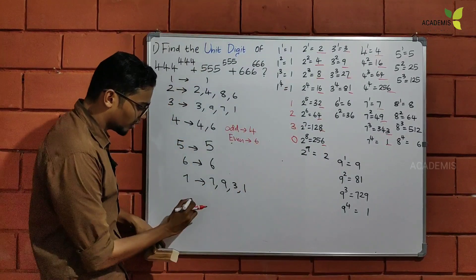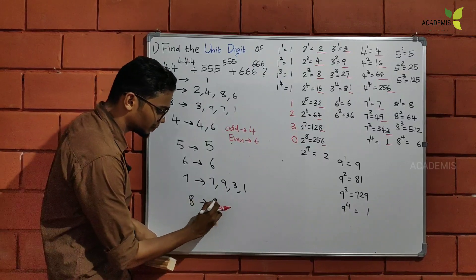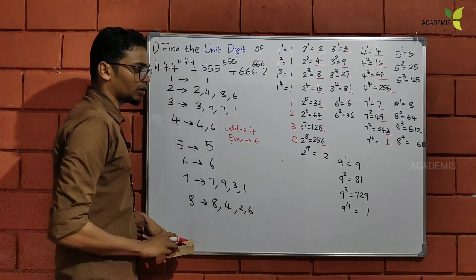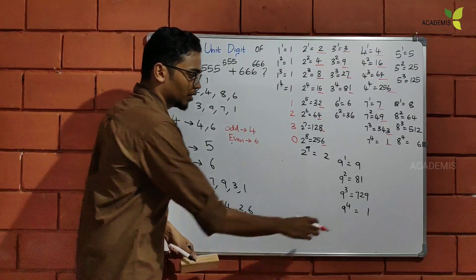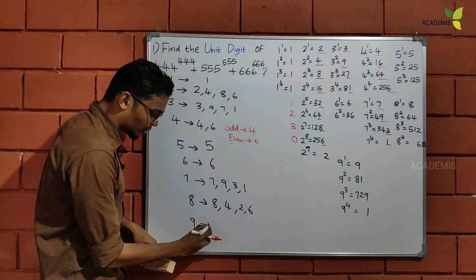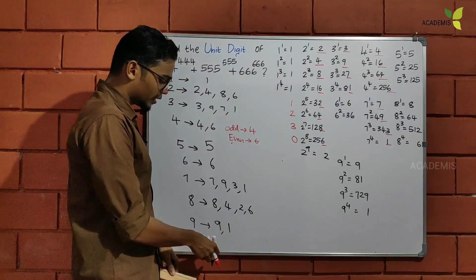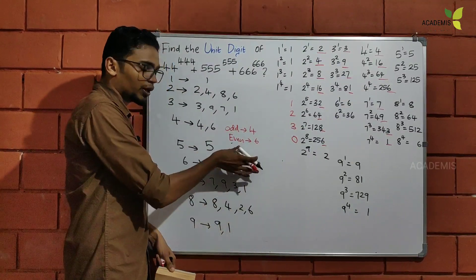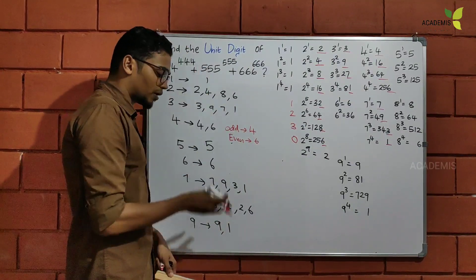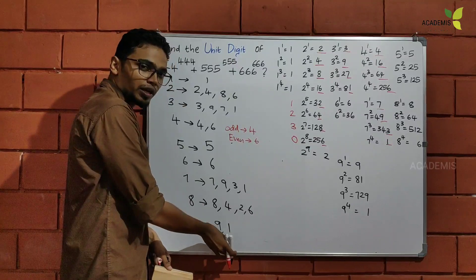We've got 8: its cycle is 8, 4, 2, 6. We've got 9: last digit repeating is 9, 9, 9... The last digit of 9 is always 9 for odd powers and 1 for even. So we write the corresponding code — this code is a number, and it's one of the cycle values.